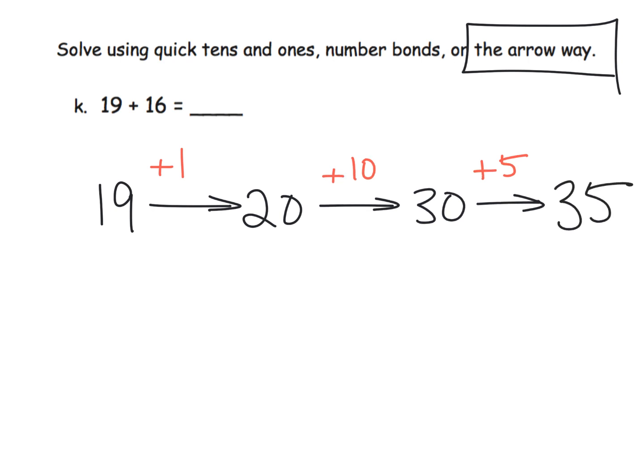And where do we see our 16? Here's our 16: 10 plus 5 plus 1 is 16. We just took our 16 and broke it up into three parts, and that's how we got the answer of 35 using the arrow way.